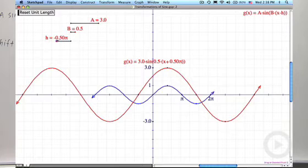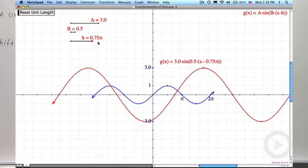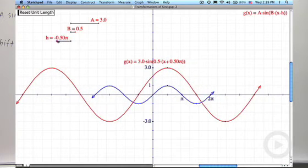So again, if h is positive, we shift to the right by that amount, in this case 0.75 pi. If h is negative, we shift to the left by that amount.